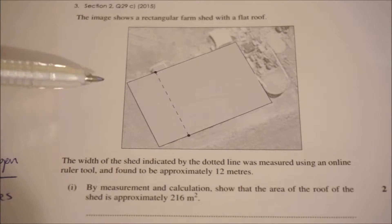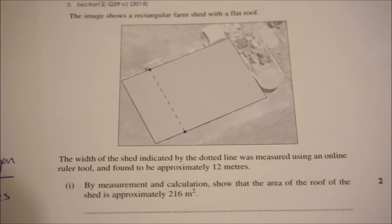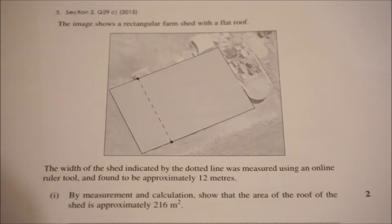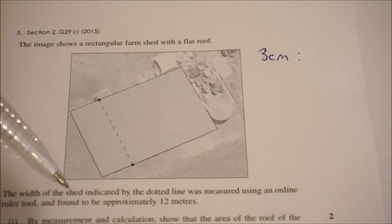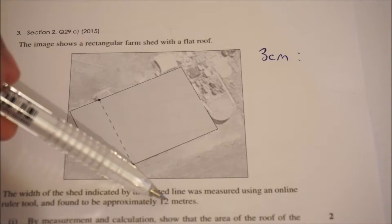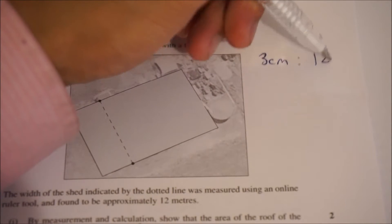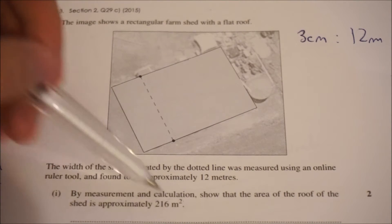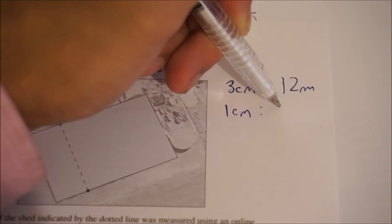This is a scale question, so you'll need a ruler. You want to measure out this line here, and you'll find that it's three centimeters. I want to find a ratio because it tells me the line is approximately 12 meters when to scale. So when I measured it, it was three centimeters, but in real life it's 12 meters. I'm going to simplify this ratio: dividing both sides by three, I get 1 cm to 4 meters.